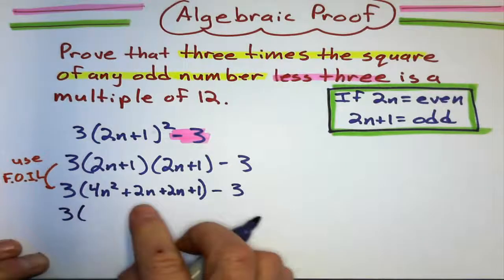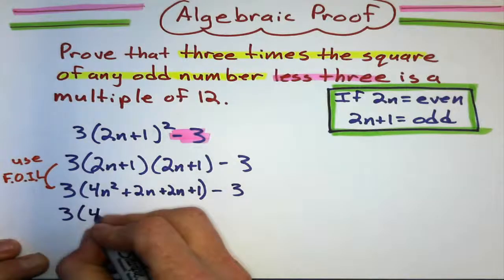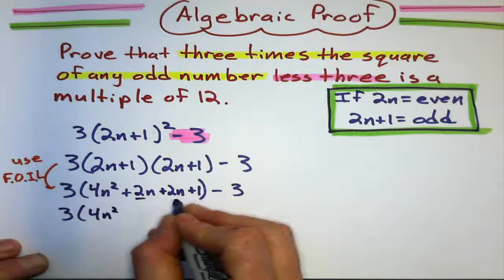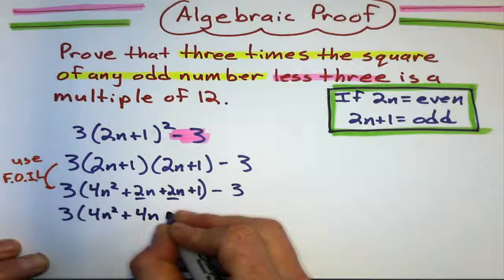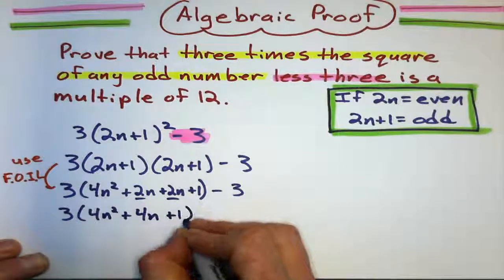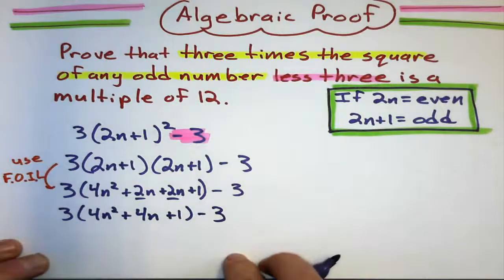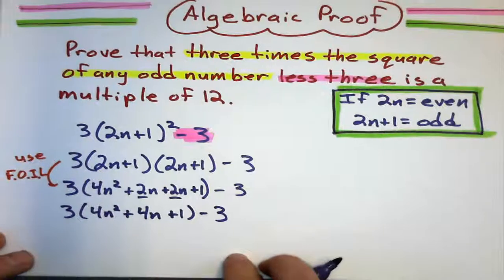Now, I see if I can collect any like terms in here, which I can. I can combine these two. 2n plus 2n is 4n. Plus 1, minus 3.